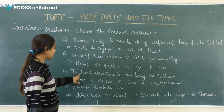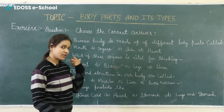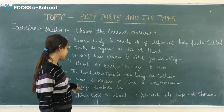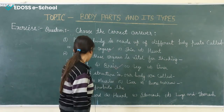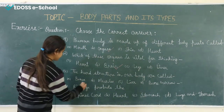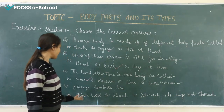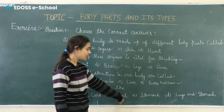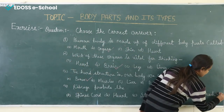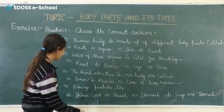Third question: the hard structures in our body that give shape and support are called — bones, muscles, liver, or bone marrow? The right answer is bones. Fourth question: the ribcage protects — the right answer is heart, lungs, and stomach are protected by the ribcage.